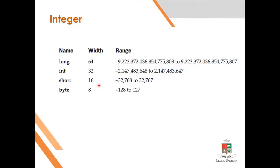In C, the architecture depends on the machine. But Java depends on the JVM to run, so everywhere the integer size is the same. The integer has 4 subtypes, and the integer data type has a very long range, so normally we use int.